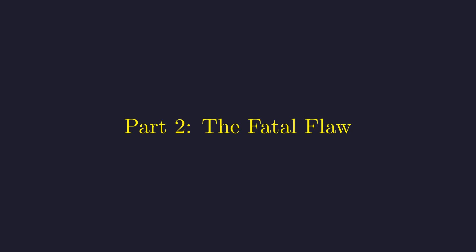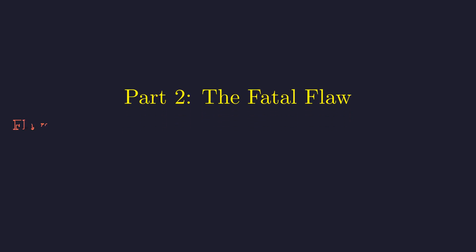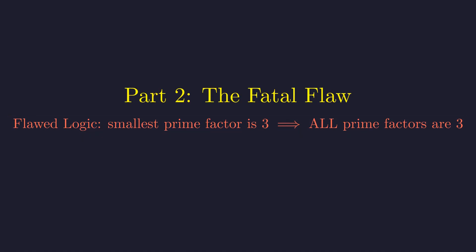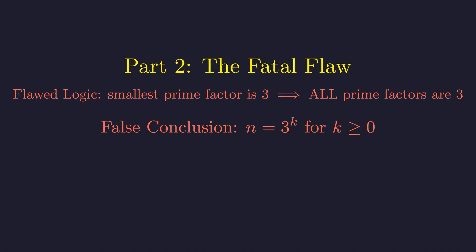Now comes the critical error. I made a subtle but devastating logical leap that invalidated the entire conclusion. I incorrectly concluded that if the smallest prime factor is 3, then all prime factors must be 3. This is a classic overgeneralization error. The proof constrains only the smallest prime factor. It says nothing about the others. This distinction is absolutely crucial. This led to the false conclusion that solutions are only powers of 3. But mathematics demands evidence, not wishful thinking.